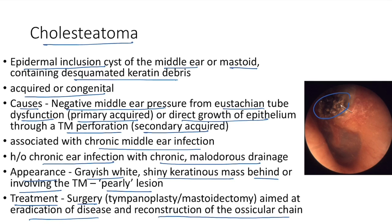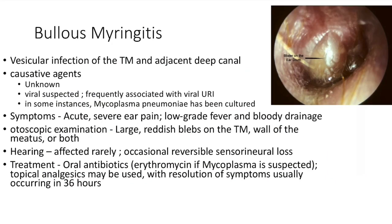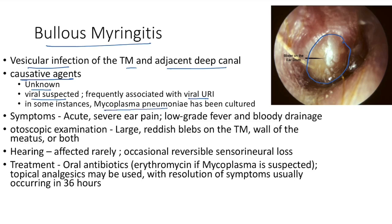Bullous myringitis is a vesicular infection of the tympanic membrane and adjacent deep canal. The exact causative agent is not known; viral etiology is suspected because it is frequently associated with viral upper respiratory tract infection. In some instances, Mycoplasma pneumoniae has been cultured.